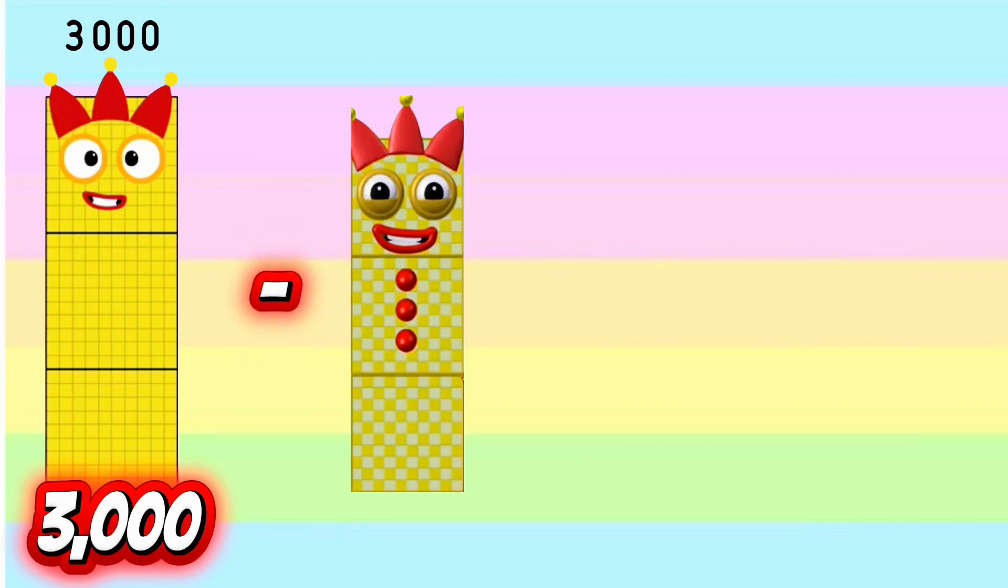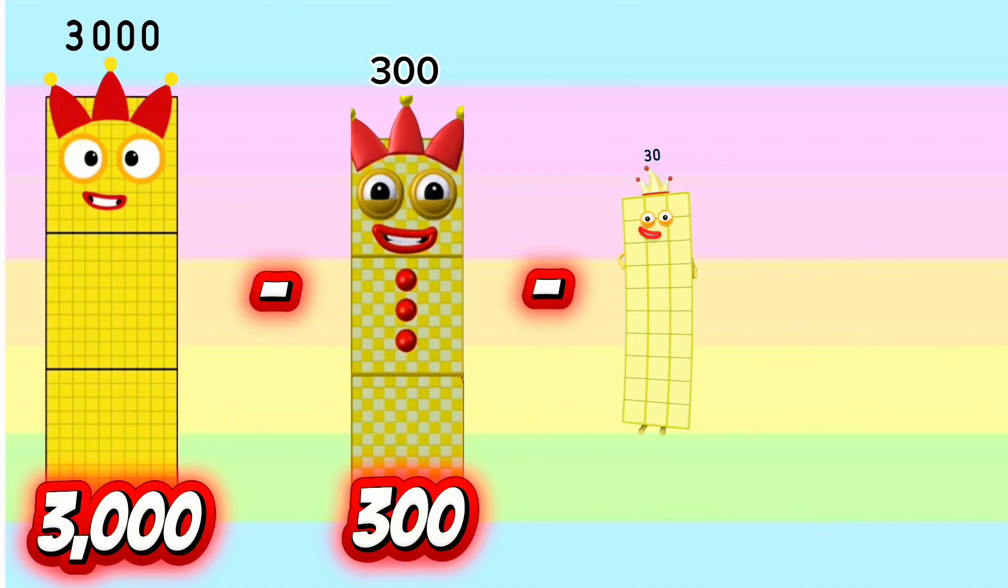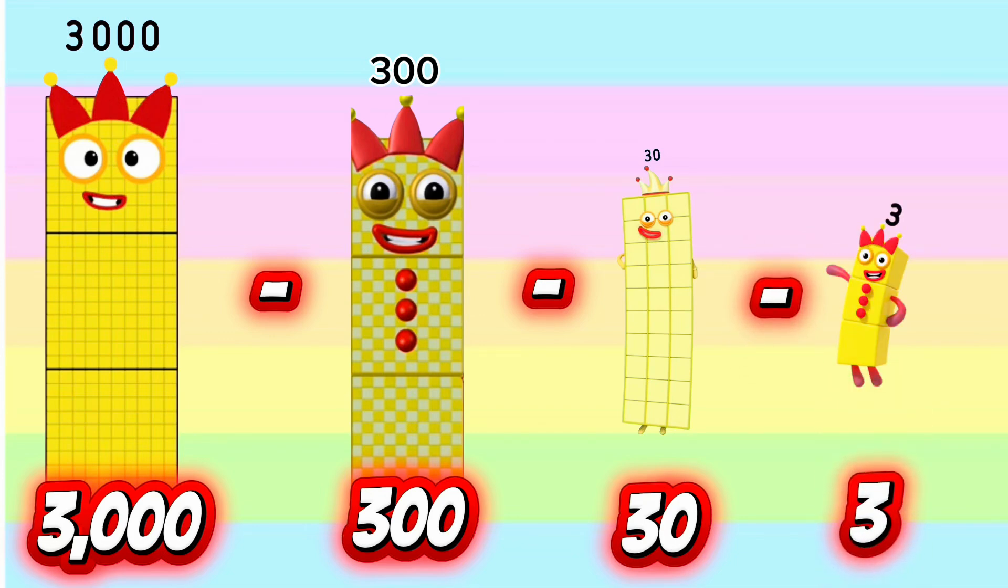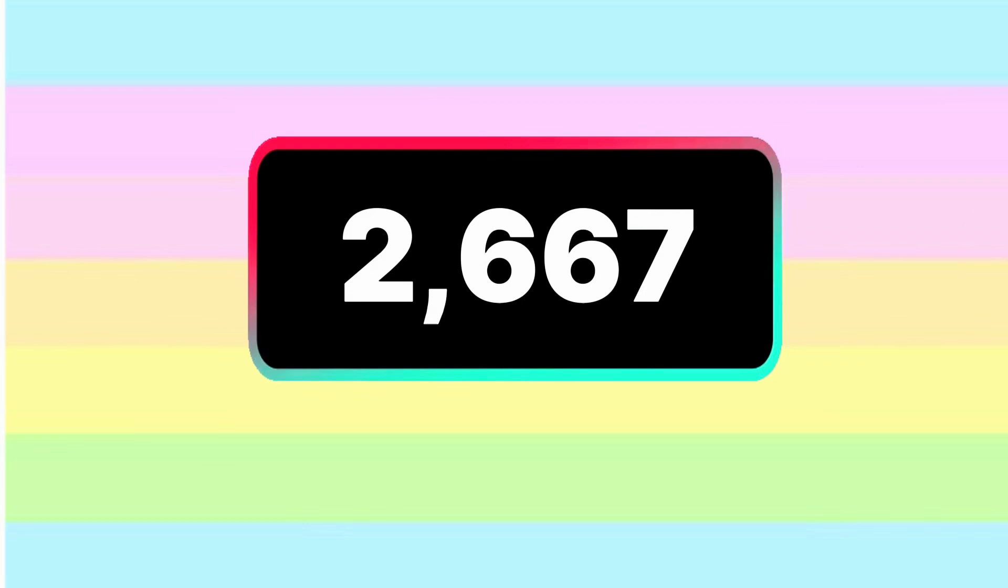3,000 minus 300 minus 30 minus 3 equals 2,667.